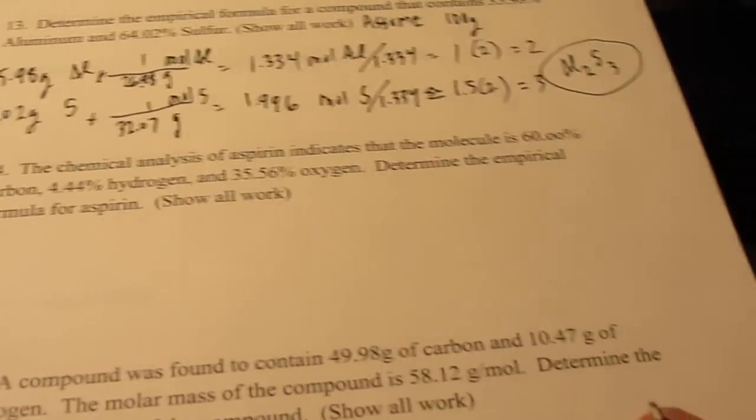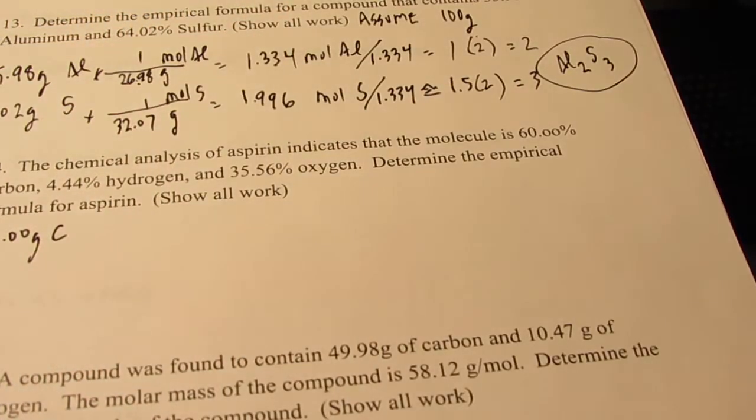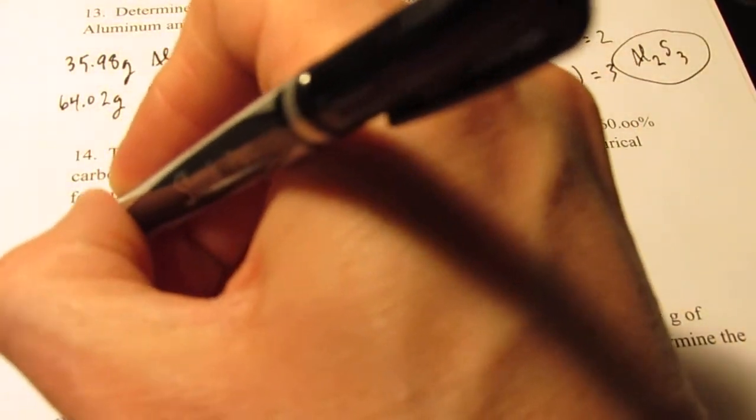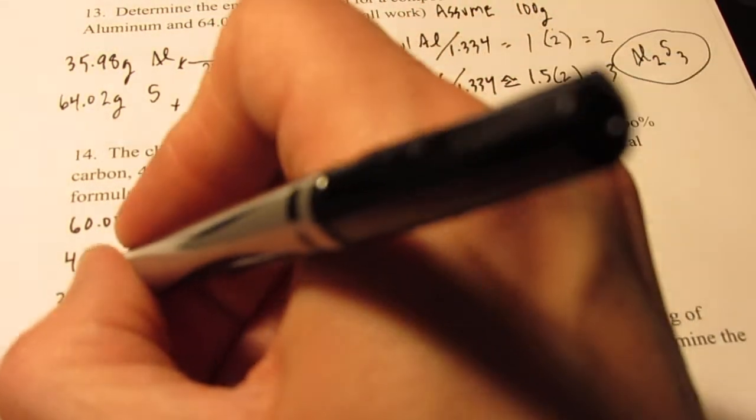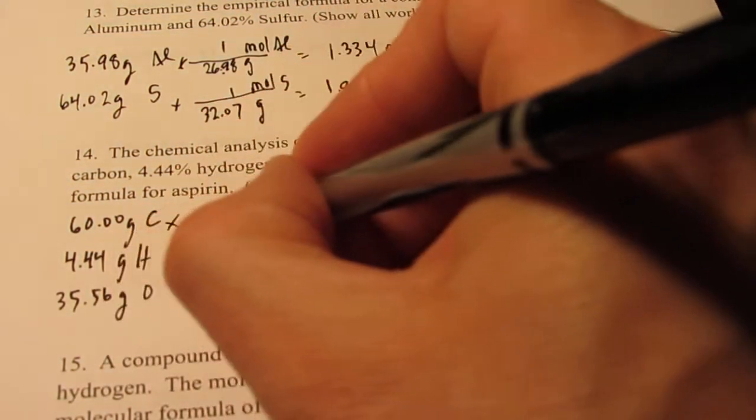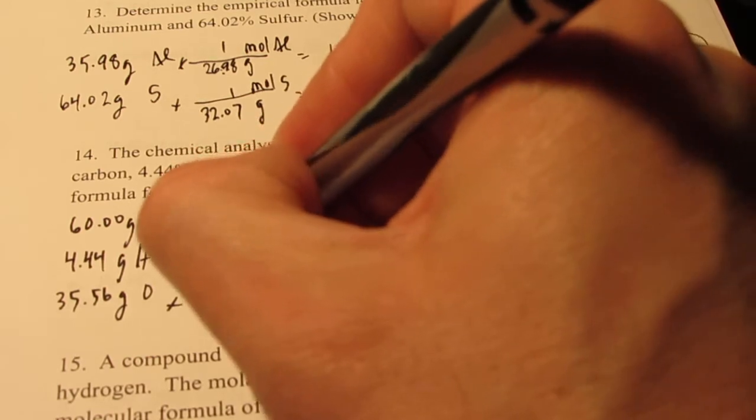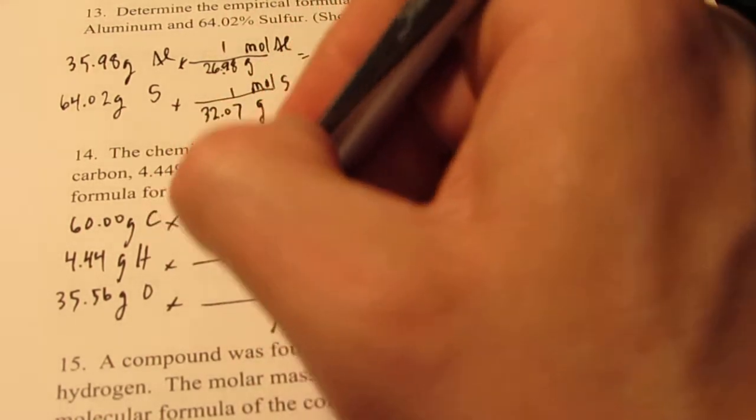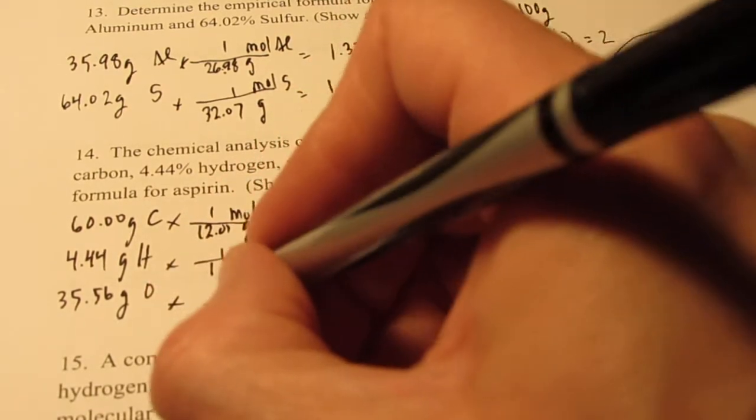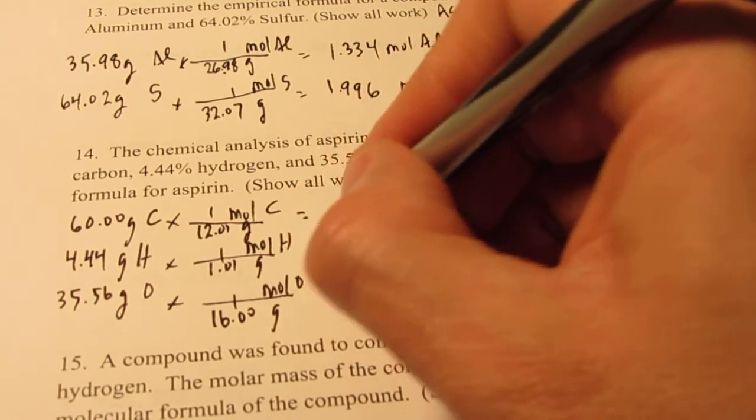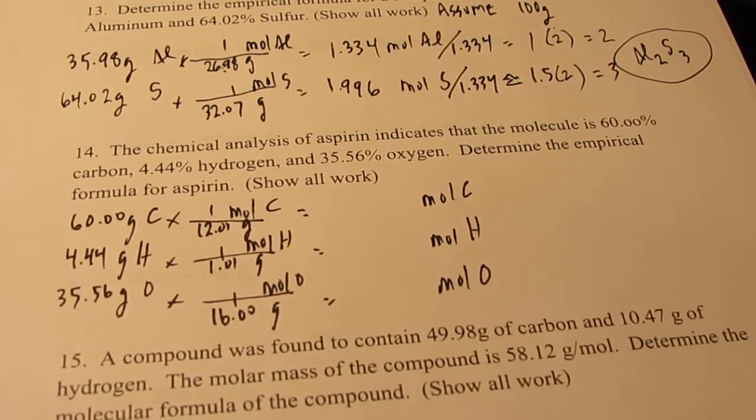Okay, let's do another one. So number 14, we have 60.00% carbon. So if I assume I have 100 grams, that's 60.00 grams of carbon. 4.44% hydrogen, that would be 4.44 grams of hydrogen. And 35.56% oxygen, that would be 35.56 grams out of 100 oxygen. Remember we want the lowest whole number mole ratio, so we'll go from grams to moles of each element. And remember we've been doing this since September, haven't we? Put one by mole. And carbon, I'm not going to look these up with you now. Trust me. Carbon has an atomic mass of 12.01, hydrogen is 1.01, and oxygen is 16.00.